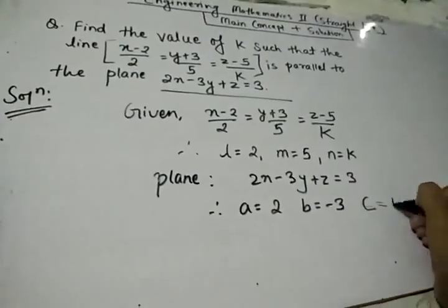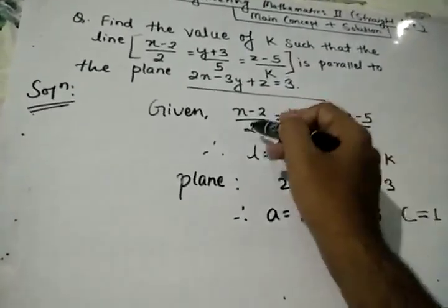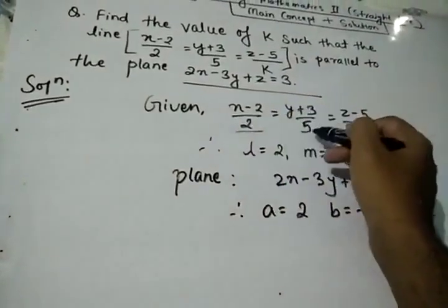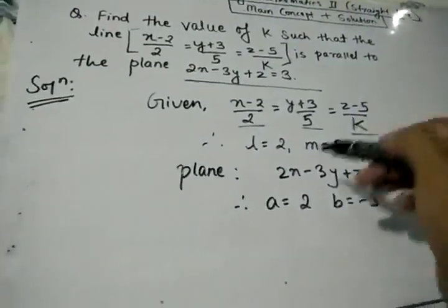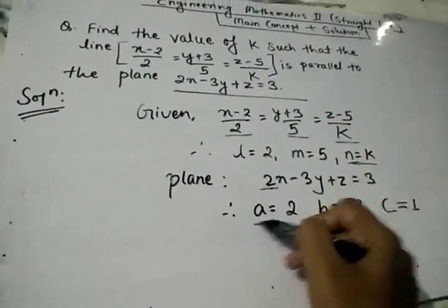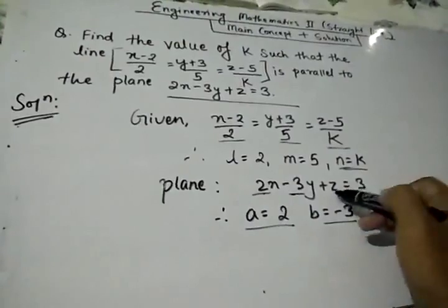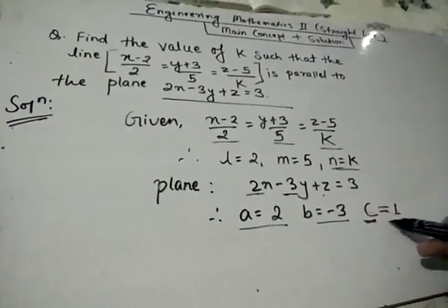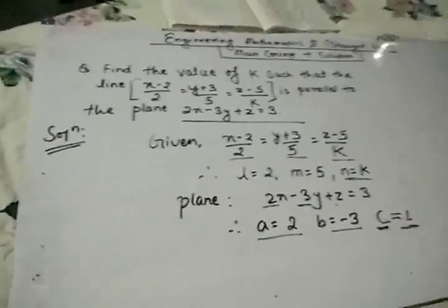This is L, this is M, and this is N. Similarly, here A = 2, B = -3, C = 1.